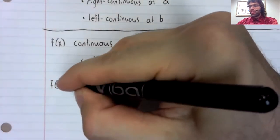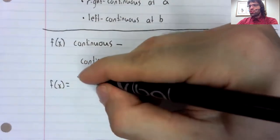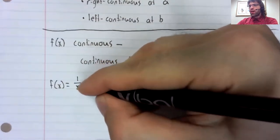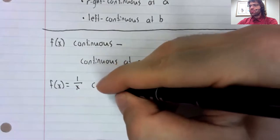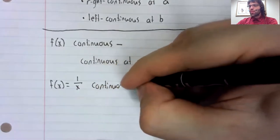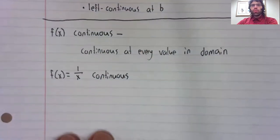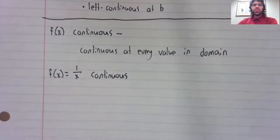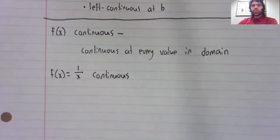f of x equals 1 divided by x is an example of a continuous function.